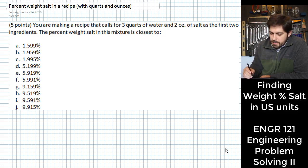This is a problem in which we are trying to make a recipe that is three quarts of water and two ounces of salt as the first two ingredients. So first of all let's look at those units.